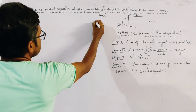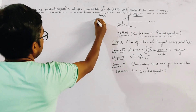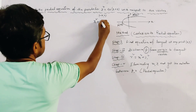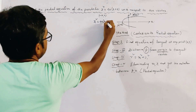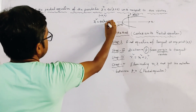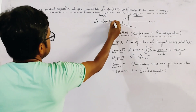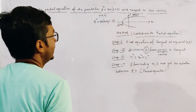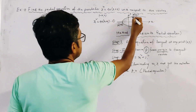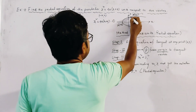Let any point P(x1, y1) lie on the parabola. We get the first relation as: y1² = 4a(x1 + a). This is Relation 1. We then draw a tangent at P.